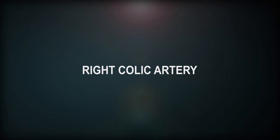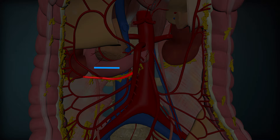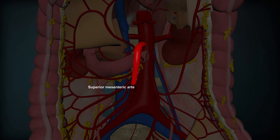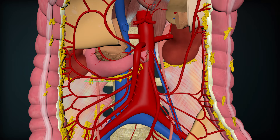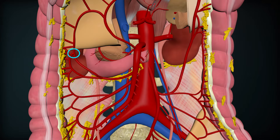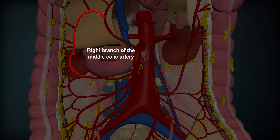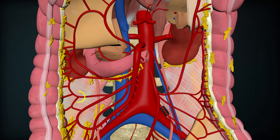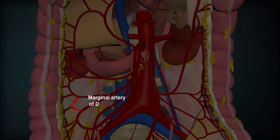Right Colic Artery: It arises from the right side near the middle of the superior mesenteric artery, runs to the right behind the peritoneum, and divides into ascending and descending branches. The ascending branch anastomoses with the right branch of the middle colic artery, and the descending branch anastomoses with the ascending branch of the ileocolic artery to form the beginning of the marginal artery of Drummond.